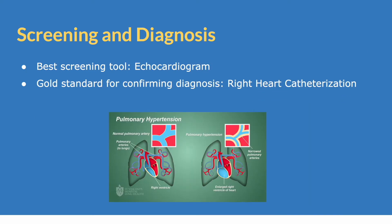The best screening tool for pulmonary hypertension is an echocardiogram. But for actually confirming the diagnosis, the gold standard is a right heart catheterization.